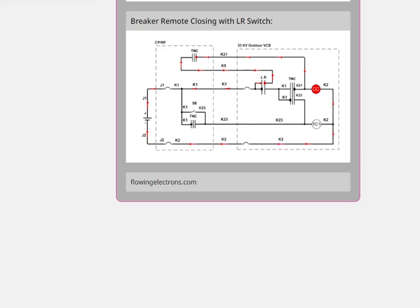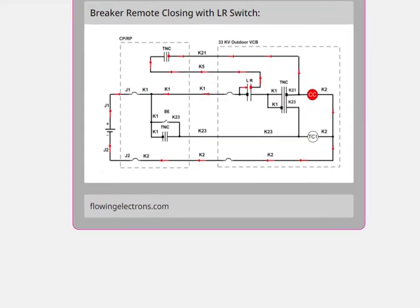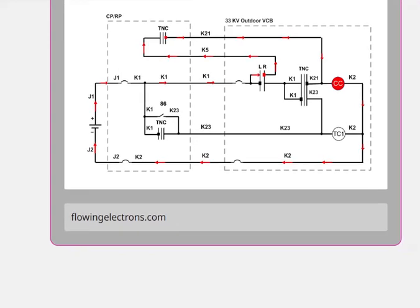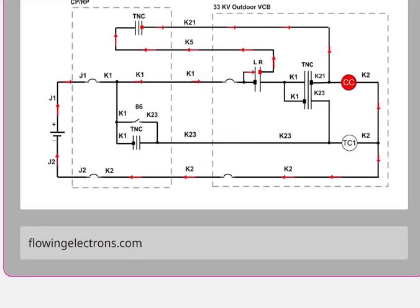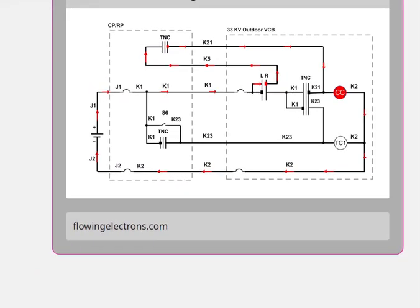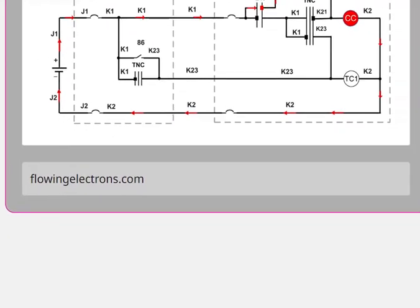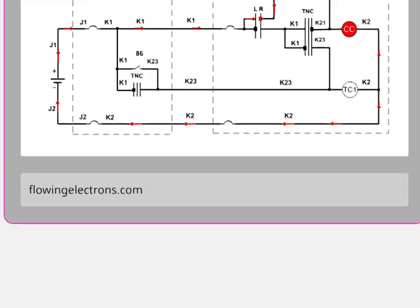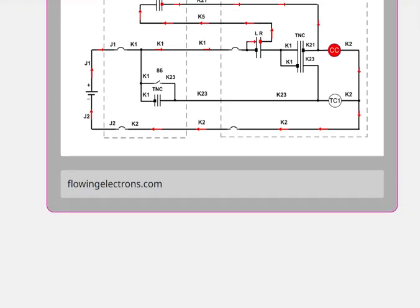So today we have learned how to close the breaker with the local remote switch in place, so that while the breaker is under shutdown we can place it on local mode and it cannot be closed remotely. For more such articles you can visit our website flowingelectrons.com. We are also on Instagram at flowing electrons. Thank you so much guys.